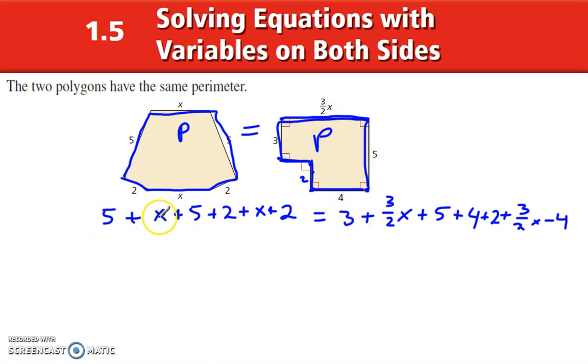Now we combine like terms. We've got 1x here, 1x there, gives us 2x. 5, 5, 2, 2, 2, 2: 10 and 4 gives us 14, is equal to...